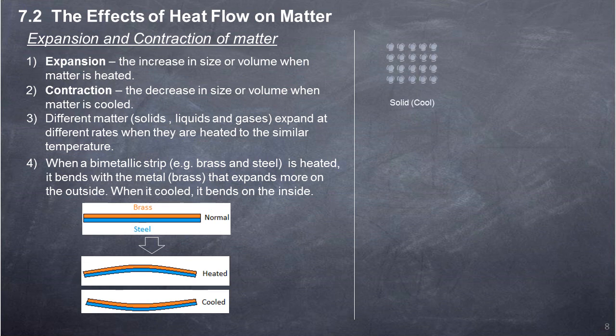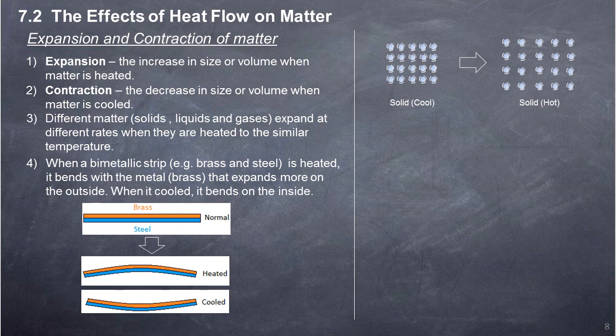In solids, atoms or molecules are close to each other and vibrate on their own position at all temperatures. When temperature increases, the atoms or molecules have more energy and vibrate even stronger, pushing neighbouring atoms or molecules further apart. This increases the volume or size of the solid. When a solid cools down, it releases energy, the atoms or molecules vibrate less, the space between them decreases, and the solid shrinks in volume or size.